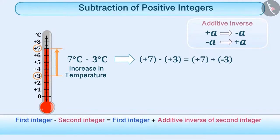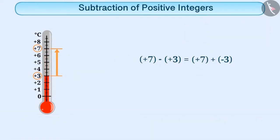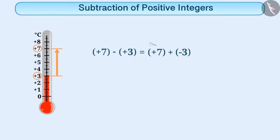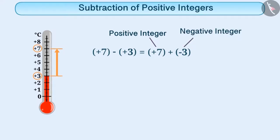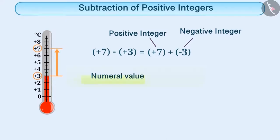Therefore, the addition can be written as plus 7 plus minus 3. Here, you can see this one is a positive integer and the other one is a negative integer. To find out the sum of these, first we will find the numeral value, that is, the number without a sign. The numeral value of plus 7 is 7, and the numeral value of minus 3 is 3. Now, we will subtract the smaller numeral value, which is 3, from the larger numeral value, which is 7. The result obtained is 4.